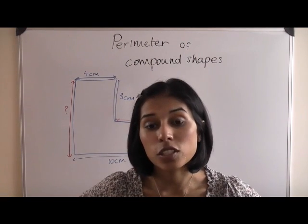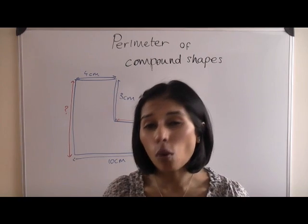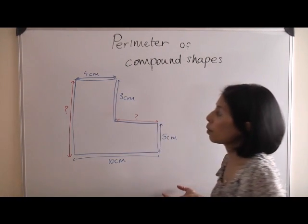We are now going to calculate the perimeter of compound shapes. A compound shape is when a shape is made up of more than one rectangle. So if you look behind me, I have a compound shape.